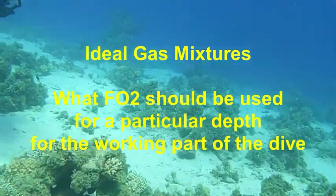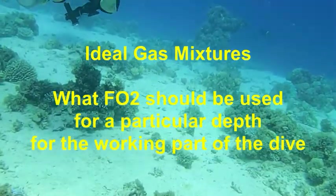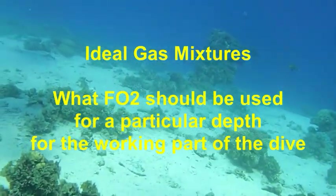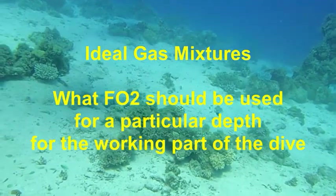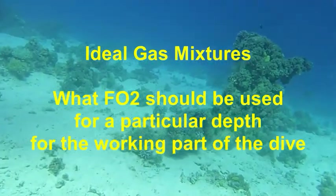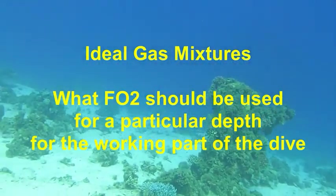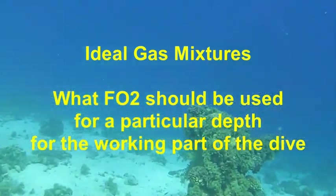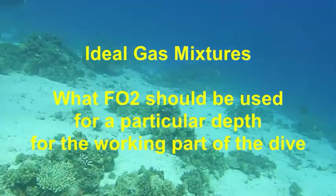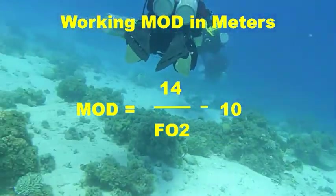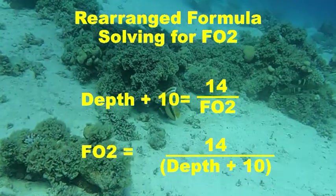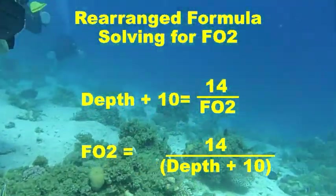The second type of calculation is for ideal gas mixtures — what fraction or percentage of O2 should be used for a particular depth. We assume 1.4 ATA to minimize our decompression obligation during the working part of a dive. To find this, we take the basic working MOD formula and rearrange it to solve for the fraction of O2 rather than the MOD. I'll break it down into two steps to make it clearer.